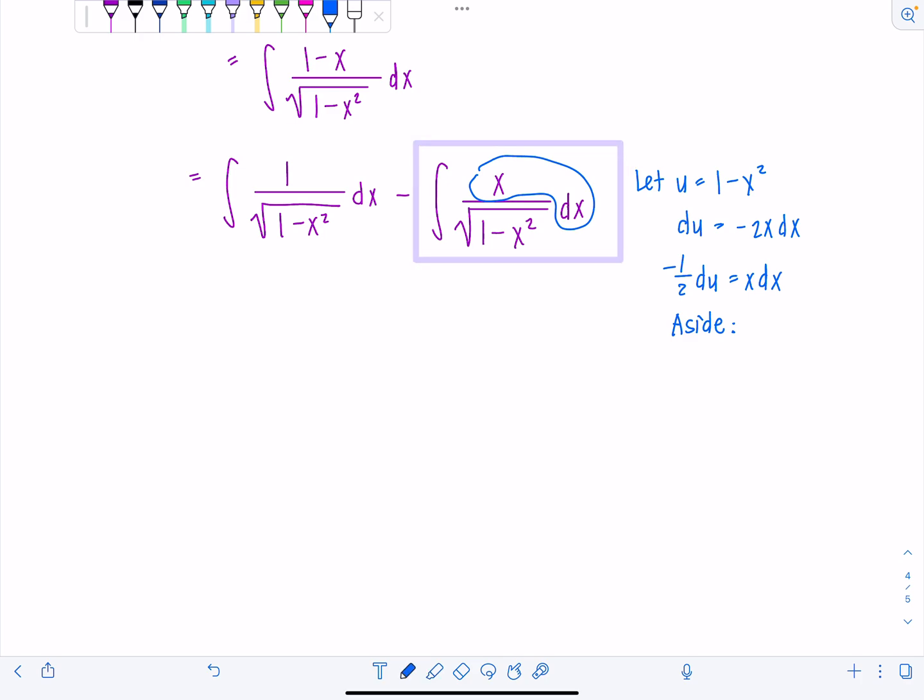So we've got here now a negative one half integral. Instead of x dx, I have du over rad u. So this is negative one half integral u to the negative one half du. Add one,